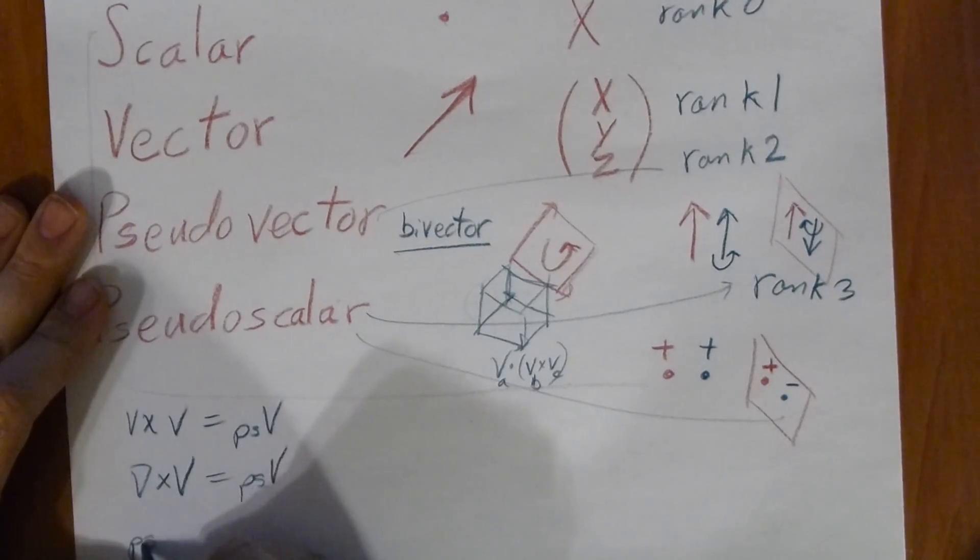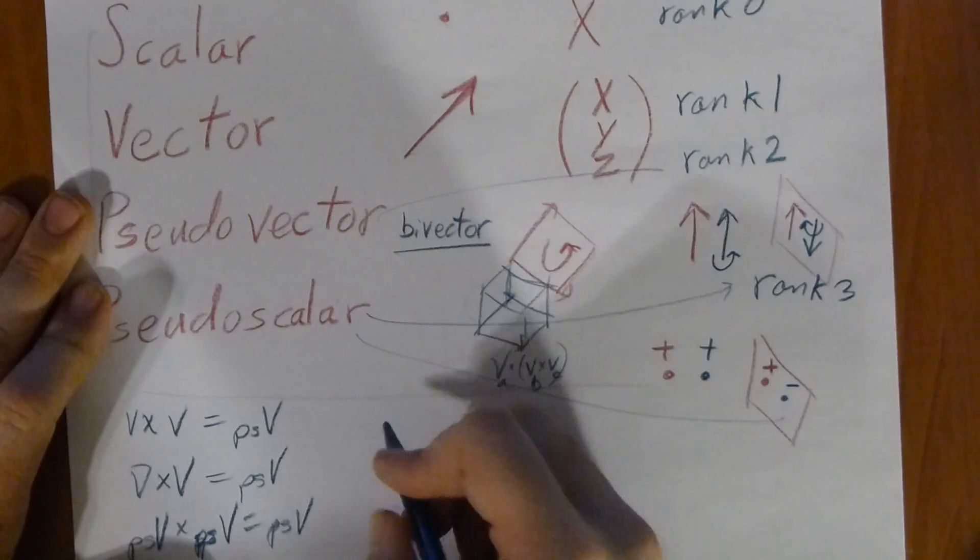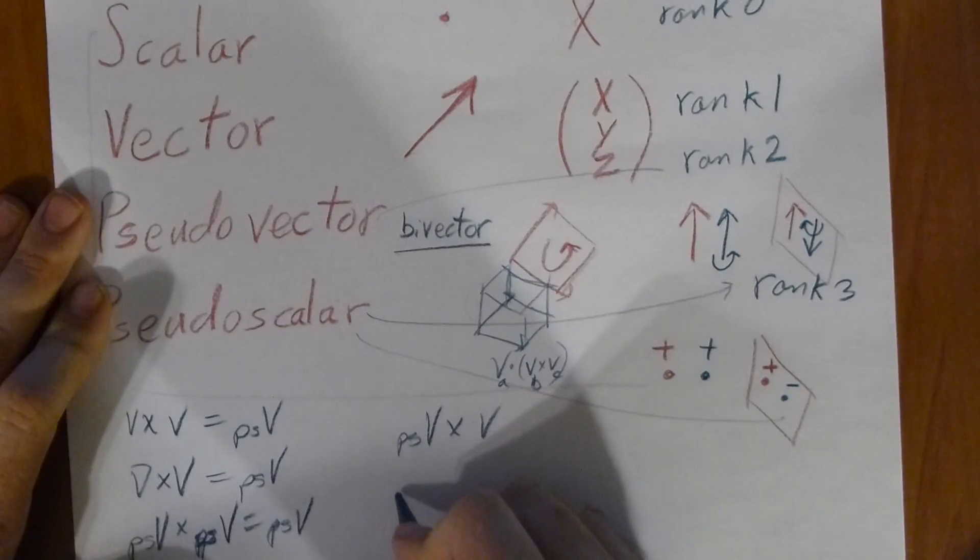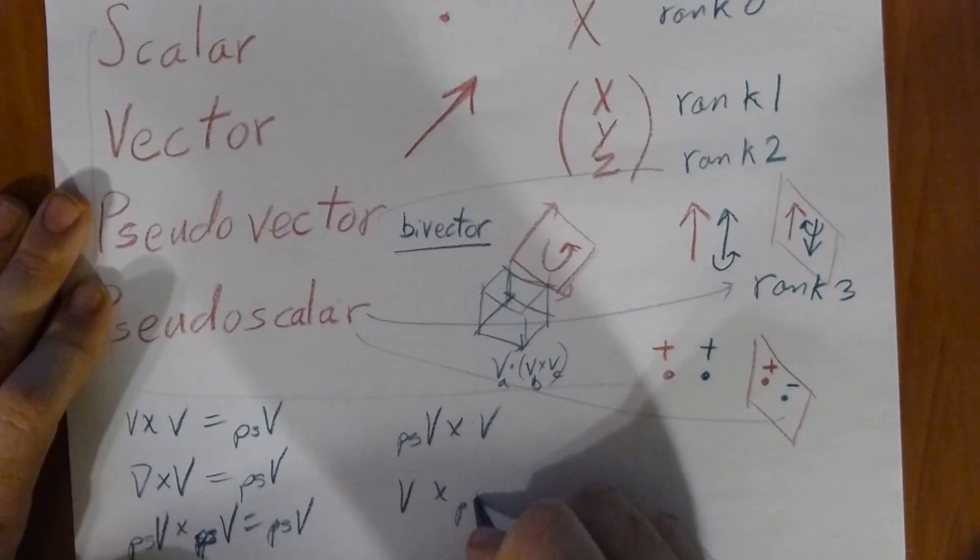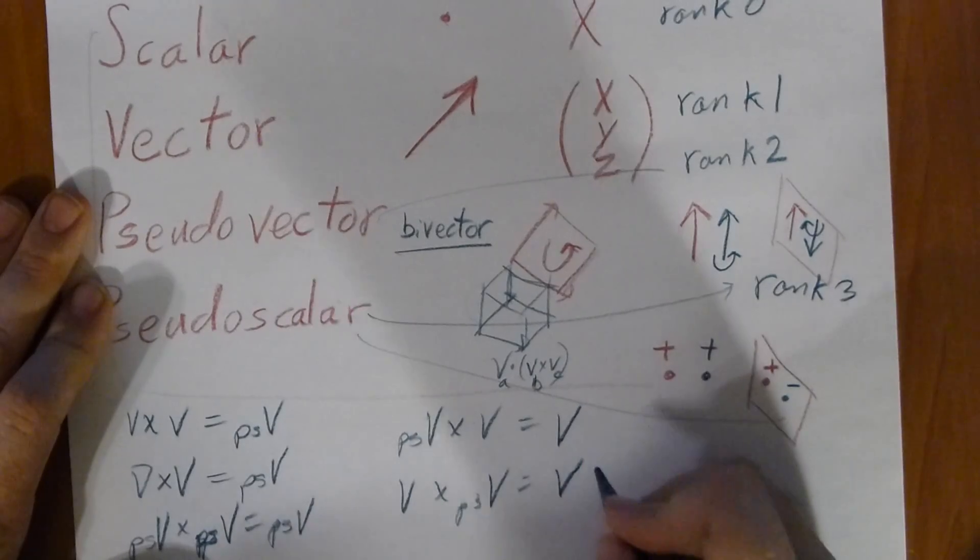The product of a pseudovector and a pseudovector is a pseudovector, whereas a pseudovector cross with a vector, or a vector cross with a pseudovector, are both ordinary vectors.